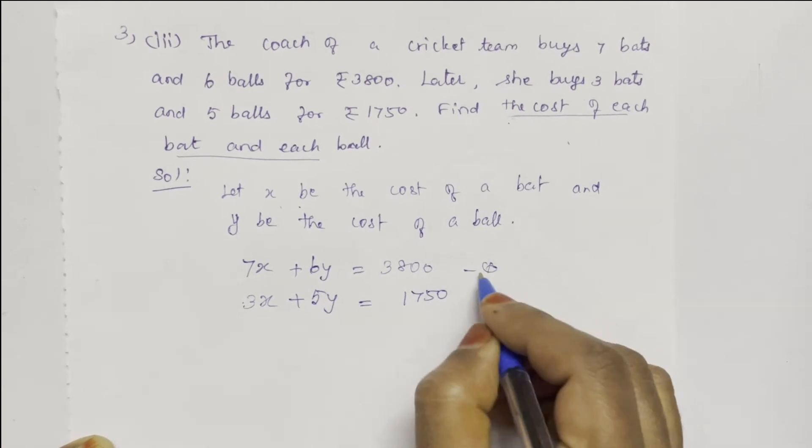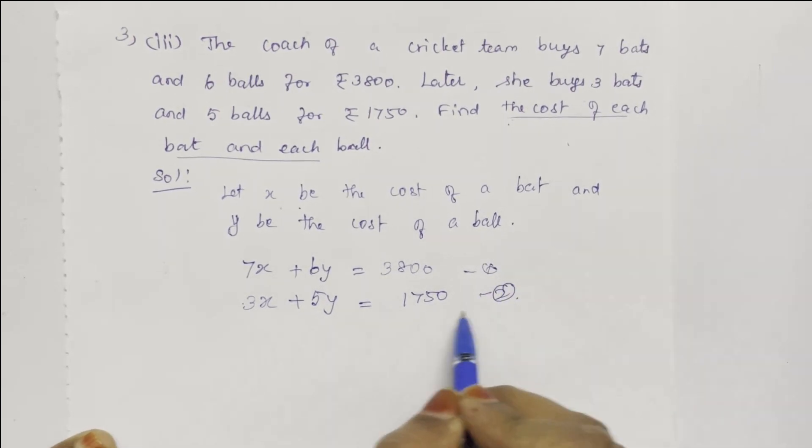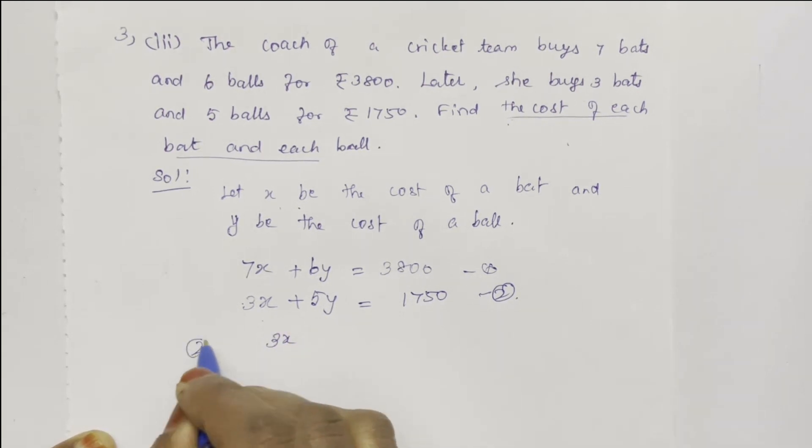These are equations 1 and 2. Equation 2 has smaller numbers, so we'll find the value of X and then find Y.